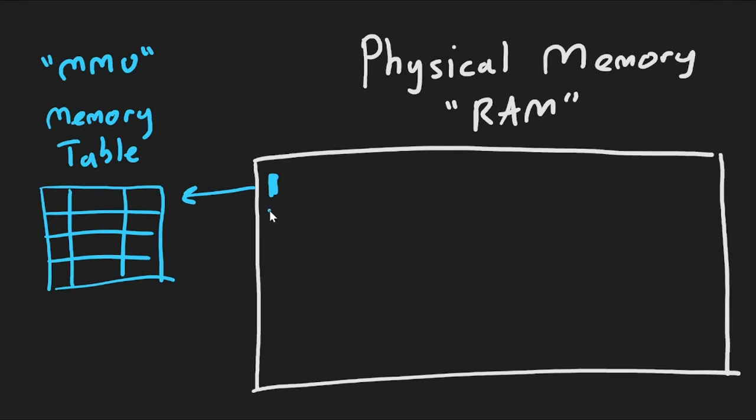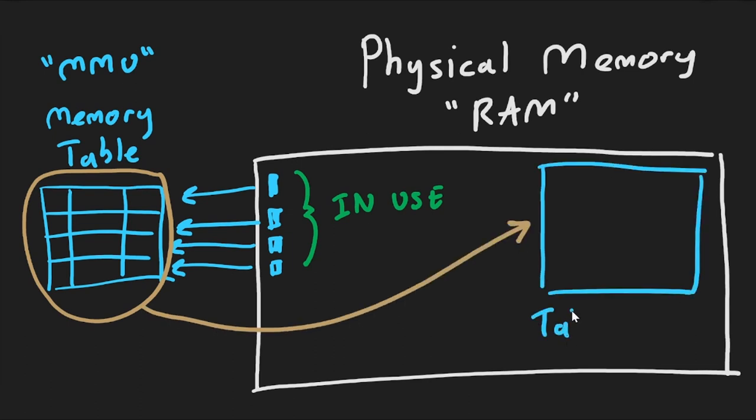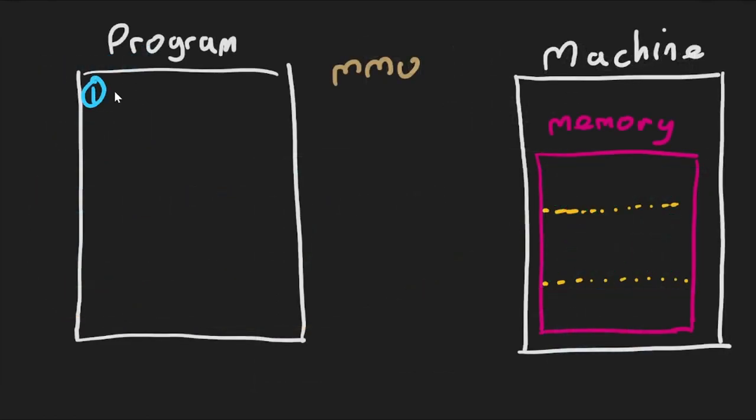One byte of memory could end up taking 20 bytes per table entry in the address translation table. The MMU table also has to exist somewhere in memory. Therefore, this translation table would waste more space than the program even required.